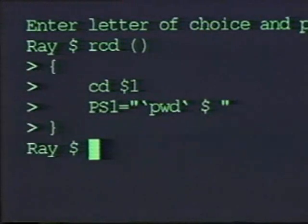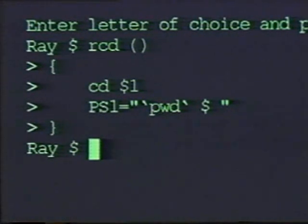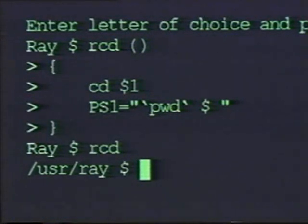Now when I change directories, my prompt will always reflect the current directory. Let me show you how it works. I've defined rcd directly in this shell, and now when I type rcd to change back to my home directory, you'll see my prompt changes. If I type cd, the prompt won't change because cd has not been redefined. I've defined rcd as a new cd command, and as long as I use rcd, my prompt will continue to trace my current directory's path name.